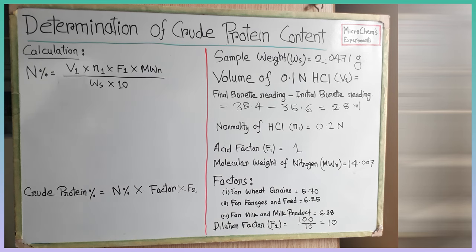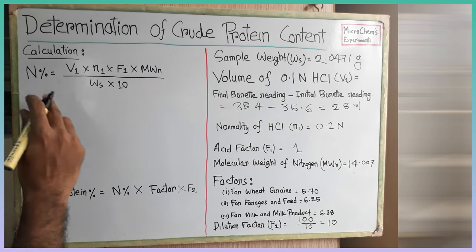Now we will do the calculation. We have to solve two equations to find the crude protein percent. However, this method is developed based on the estimation of total nitrogen from the sample to determine the protein content. That is why we need to find the nitrogen percent first. We can find the nitrogen percent from the first equation. Put the values in the first equation from the right side of the board.